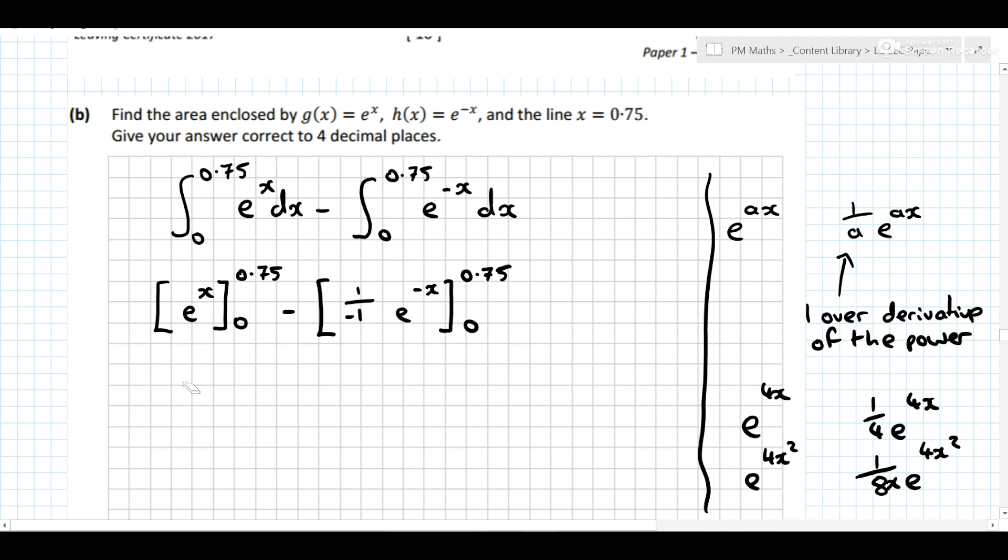Well, let's go and evaluate this: e^0.75 minus e^0 minus... minus e^(-0.75) minus minus e^0.